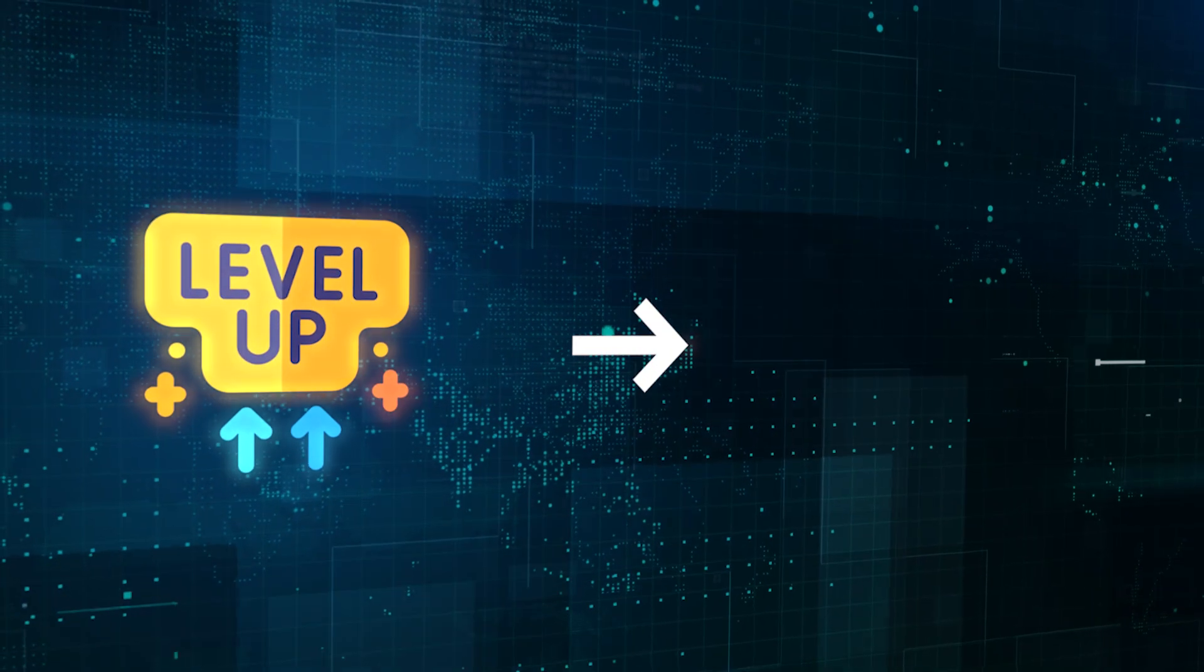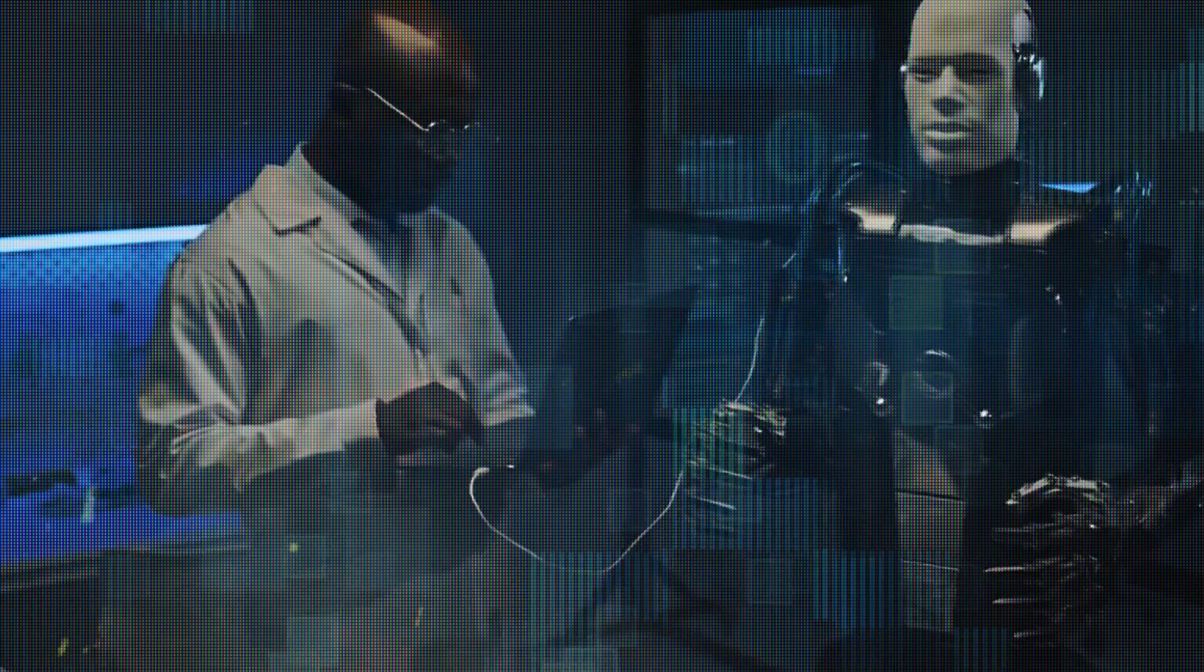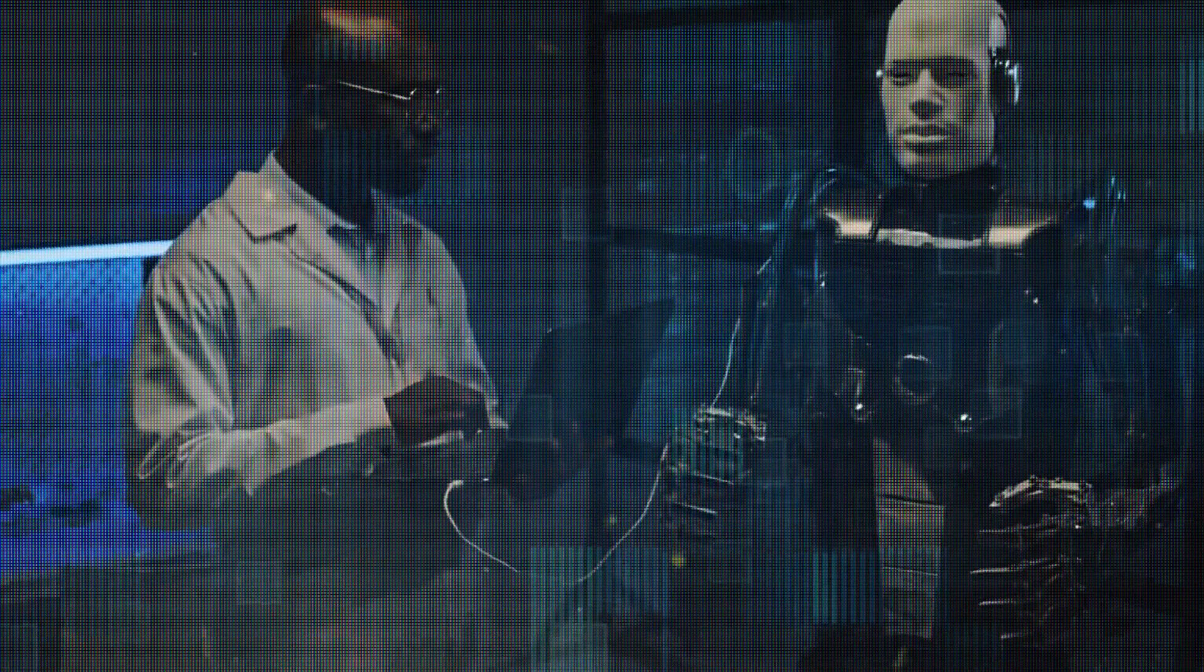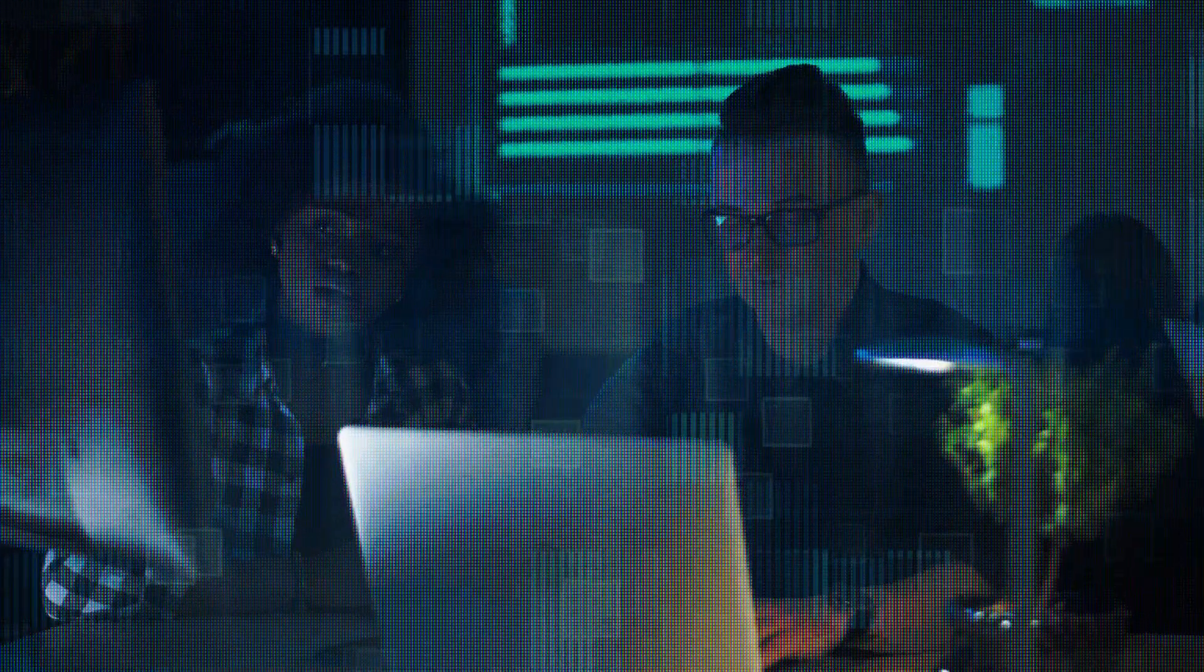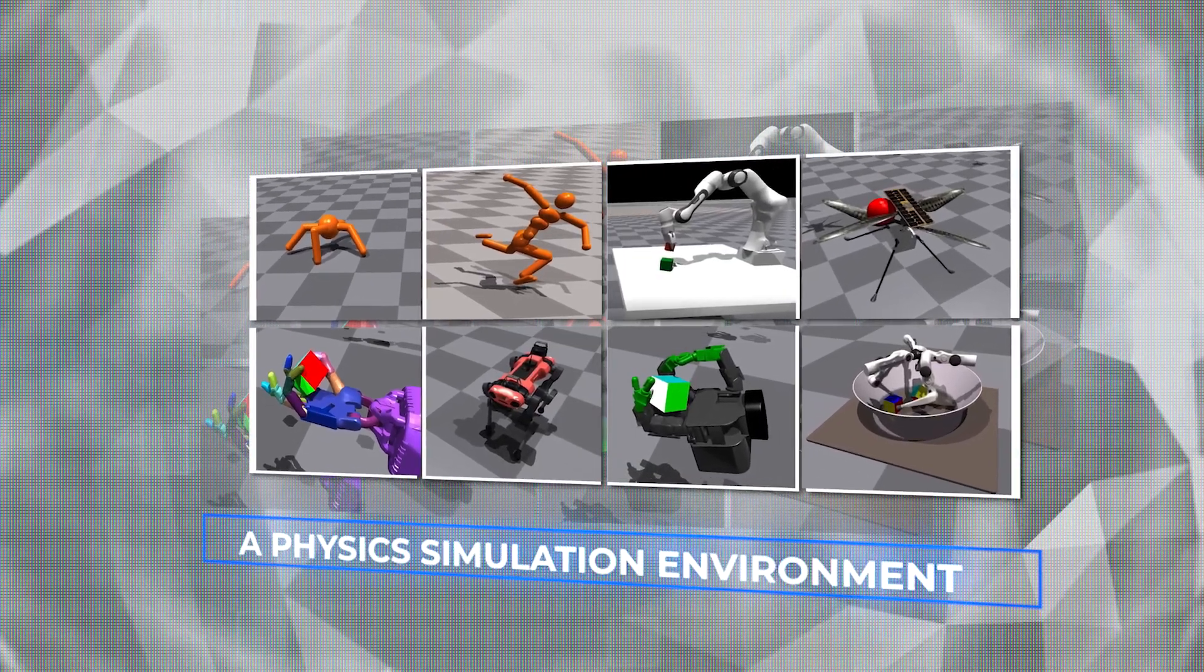It bridges the gap between high-level and low-level tasks by using language models to create algorithms that train robots to perform complex tasks. The project includes a paper and AI algorithms that developers can experiment with using NVIDIA Isaac Gym, a physics simulation environment.